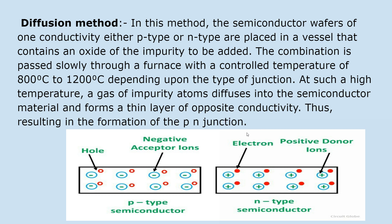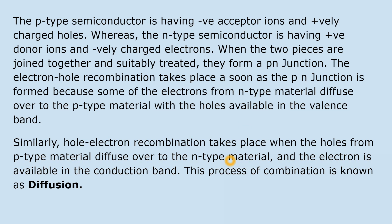In the P-N junction diagram, P-region and N-type semiconductor are shown. In P-type semiconductor, there are holes as majority carriers and the ions are negative acceptor ions. Whereas in N-type semiconductor, we have electrons as majority charge carriers and the ions are positive donor ions — after donating one electron, the atom becomes a positive donor ion. So the P-type semiconductor has negative acceptor ions and positively charged holes, whereas the N-type semiconductor has positive donor ions and negatively charged electrons.